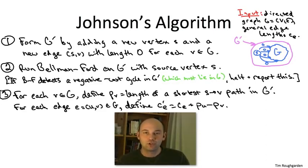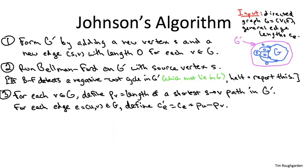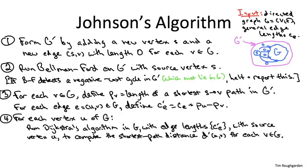Assuming the new edge lengths are non-negative, it makes sense to use Dijkstra's algorithm n times, once for each choice of the source vertex, to compute all pairs shortest paths in the graph G with the new edge lengths C prime. In a particular iteration, when using vertex U as the source, we compute n shortest path distances from U to the various n possible destinations. We call those shortest paths computed by Dijkstra D prime of U comma V.